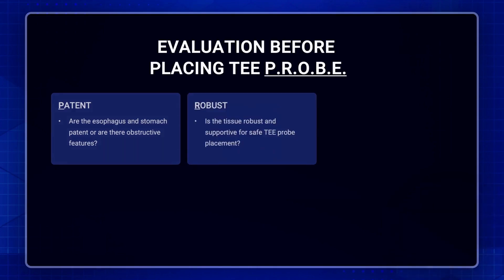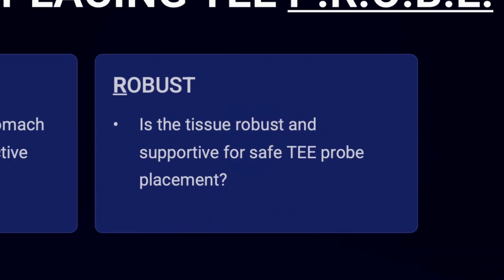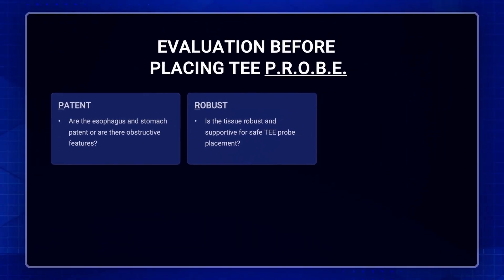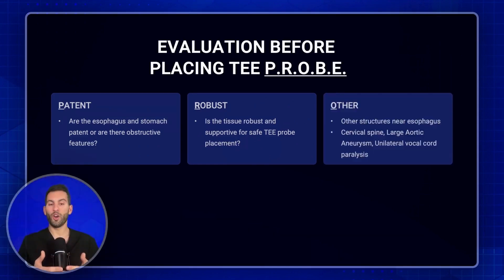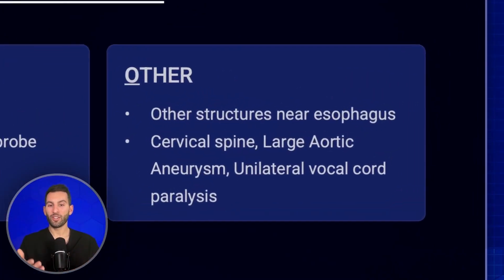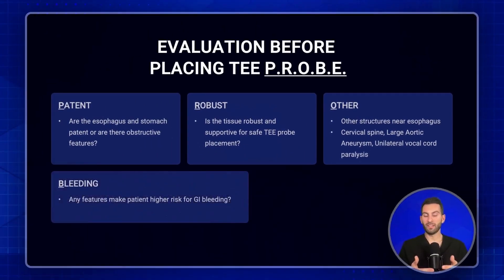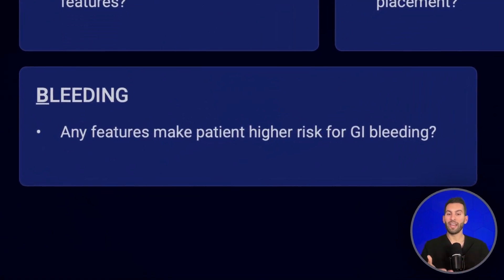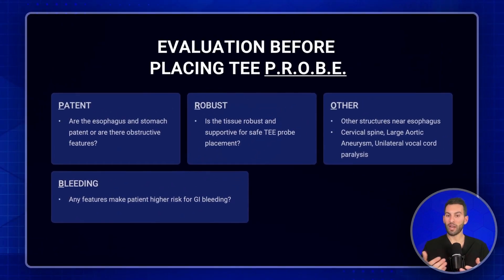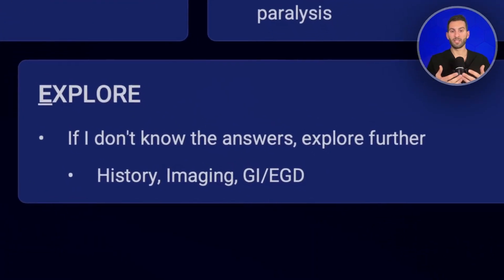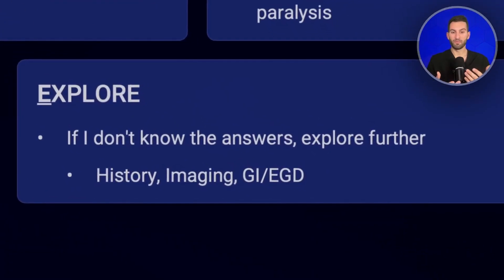The R stands for robust — are the tissues robust and supportive for safe TEE probe placement and passage? Things to consider here include history of radiation or prior surgery. The O stands for other, encouraging us to look at many things outside the esophagus and GI tract. The B stands for bleeding — any features that increase the patient's bleeding risk with TEE placement. And the last letter, E, stands for explore — sometimes you won't know the answer, so we need to explore further.